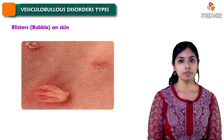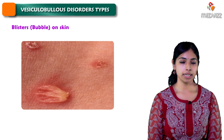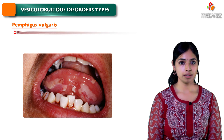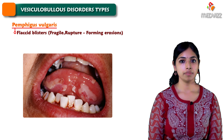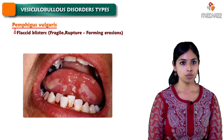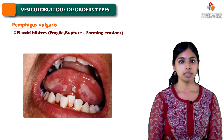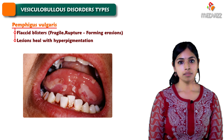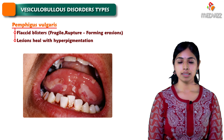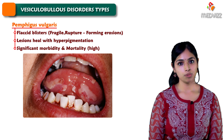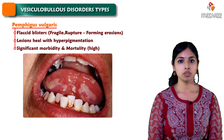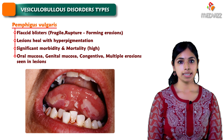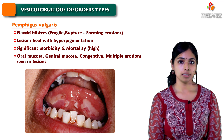There are two main conditions we commonly see: pemphigus vulgaris and bullous pemphigoid. In pemphigus vulgaris, we see flaccid blisters — meaning the blisters are often very fragile and they rupture, forming erosions. They are seen all over the body, and there is significant morbidity associated with these erosions. The lesions often heal with hyperpigmentation, and there is significant morbidity as well as mortality associated with this condition. There is also involvement of the oral mucosa, genital mucosa, and conjunctiva, and multiple erosions can be seen.